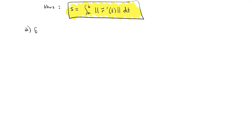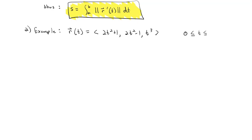So let's do an example using this new formula. Let's say r(t) is equal to (2t²+1, 2t²-1, t³), and we're going to find the arc length as time goes from 0 to 3. First we need to find the derivative of our vector-valued function, which is going to be (4t, 4t, 3t²). Next, the formula says we need to know the magnitude of the derivative of the vector-valued function.